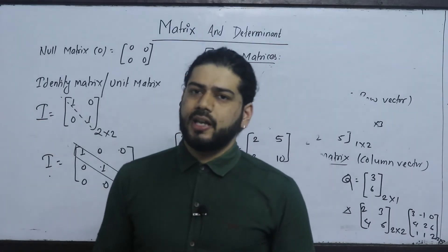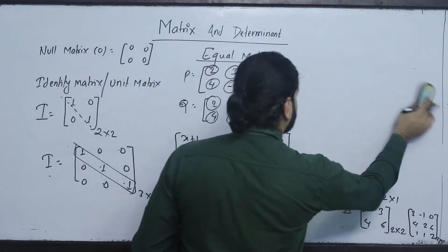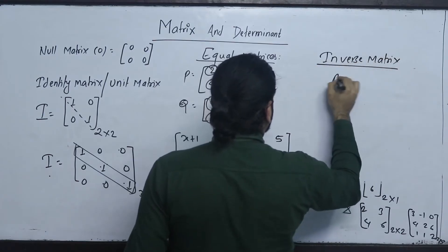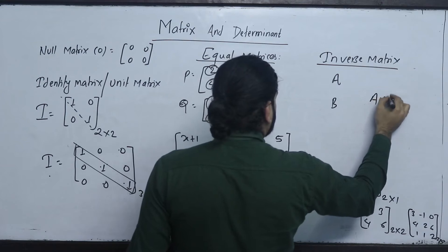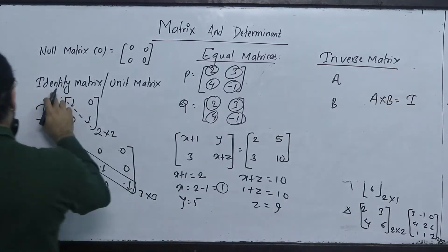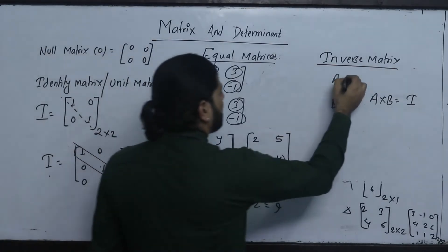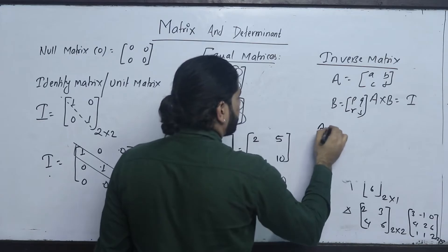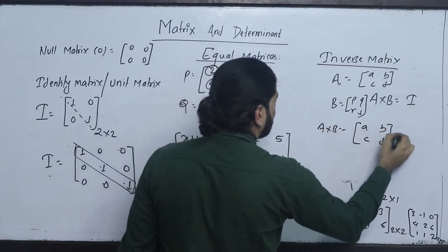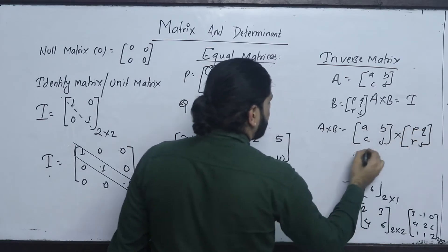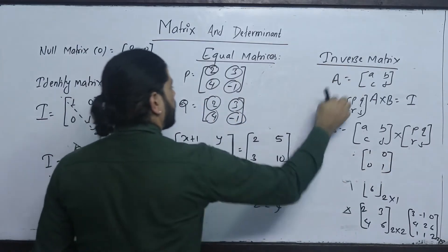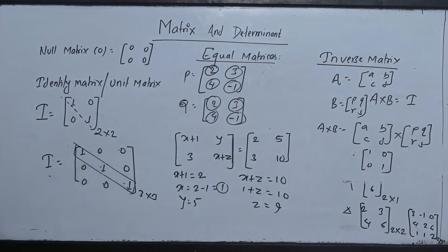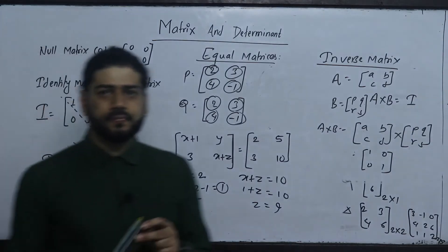We can also do the inverse matrix. For matrix A and matrix B, A multiplied by B equals the identity matrix — that is the inverse matrix relationship. For a 2 by 2 case, with elements A, B, C, D and P, Q, R, S: A into B equals [1, 0; 0, 1]. For 3 by 3: A into B equals [1, 0, 0; 0, 1, 0; 0, 0, 1]. We will cover finding the inverse matrix in the next class.